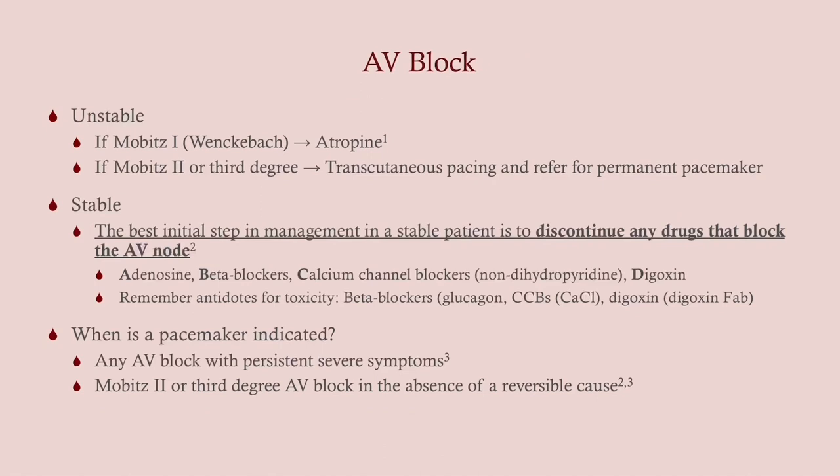For unstable patients: Mobitz type 1 or Wenckebach can be treated with atropine. However, Mobitz type 2 or third degree block — atropine is not useful; go straight to transcutaneous pacing, then refer for a permanent pacemaker. If stable, the best initial step is to discontinue AV-nodal blocking drugs. Common culprits include beta blockers, calcium channel blockers, and digoxin. To reverse: glucagon for beta blockers, calcium for calcium channel blockers, and digoxin-specific antibodies for digoxin.